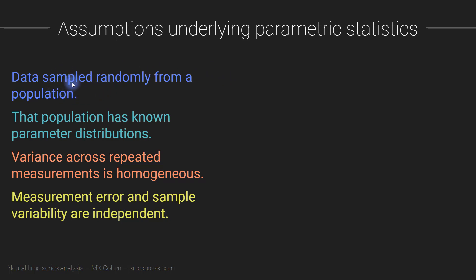The assumptions are: first, the data are sampled randomly from a population — there's no bias in the data sampling. Second, that population has known parameter distributions, where parameters refer to key descriptive statistics like the mean, variance, and the shape of the spectrum. Third, variance across repeated measurements is homogeneous. And finally, measurement error and sample variability are independent across different measurements — for example, across different neurons or different individuals.